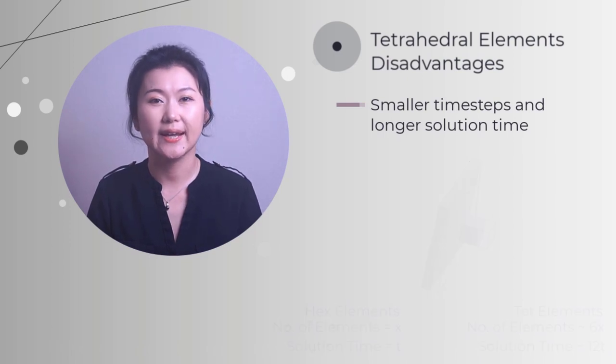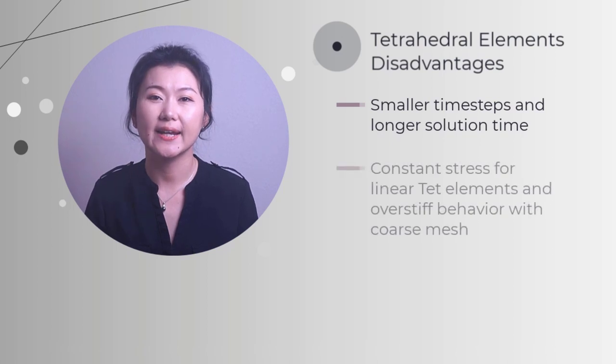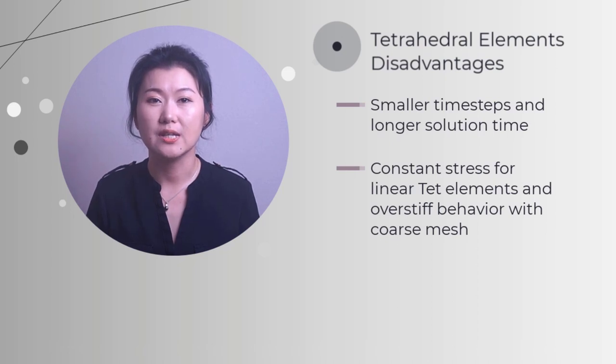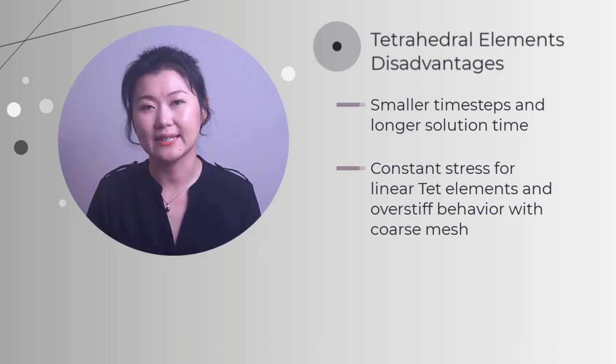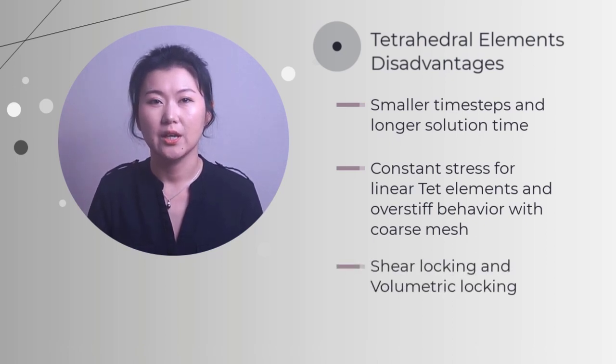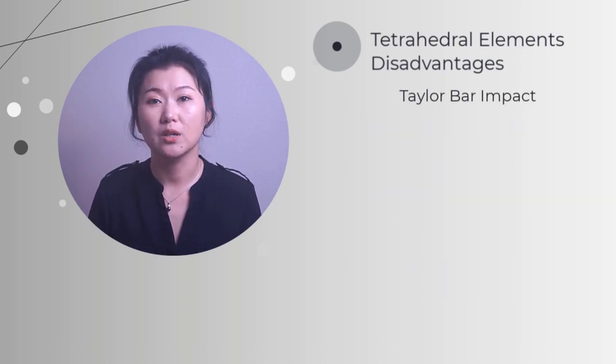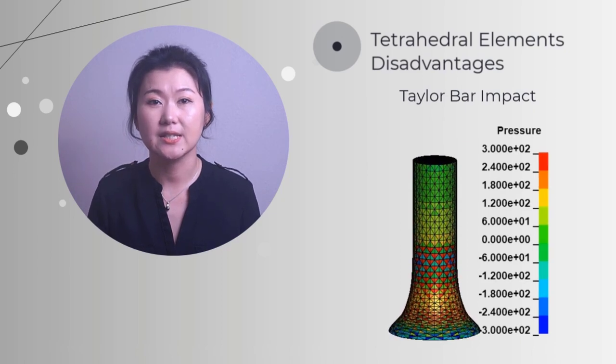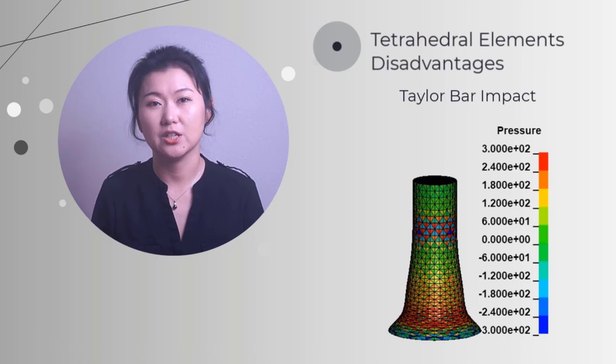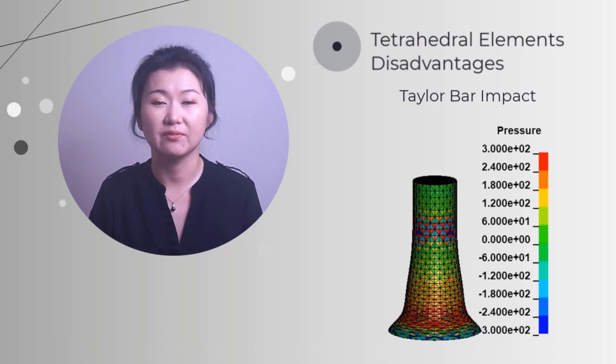Also, one should be cautious when linear tetrahedral element is used in a model. Because of the nature of the shape functions, linear tetrahedral element always obtains constant stress over one element. Therefore, if the mesh is coarse, the model will behave overly stiff. In addition, linear tetrahedral element also suffers from shear locking and volumetric locking. If we use linear tetrahedral element to solve the Taylor bar impact problem, we can see checkerboard mode from the plot of hydrostatic behavior, indicating severe volumetric locking. Due to various problems in linear tetrahedral element, we should be especially careful to rule out numerical errors when using this type of element in simulation.